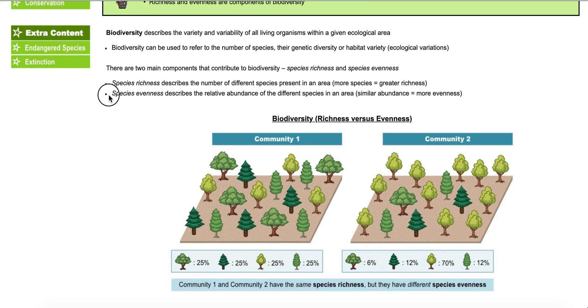Let's look at the next term, species evenness. Species evenness describes the abundance of the different species in the area. So we would say if there's a more similar abundance, meaning every species has about the same amount, it would be more even. The more even an ecosystem is, the more healthy it is biodiversity-wise as well.